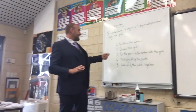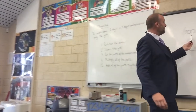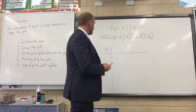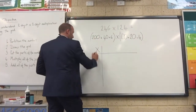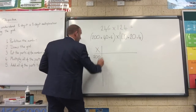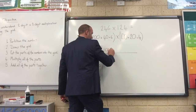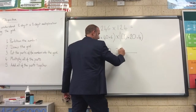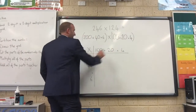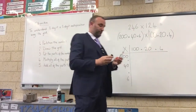Third step: put the parts of the numbers into the grid. Remember, always put the first number in the column and your second number in the row so you won't confuse yourself. So we put in 200, 40, and 6. The second number gives us 100, 20, and 4. If you added those back together you'd have 246 multiplied by 124.